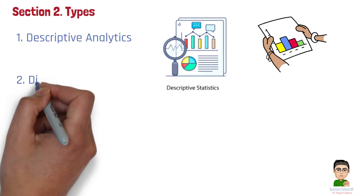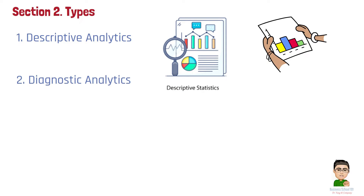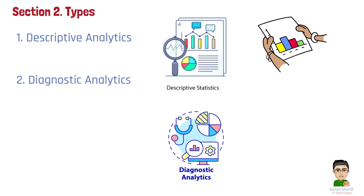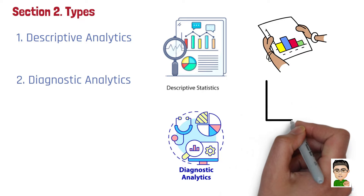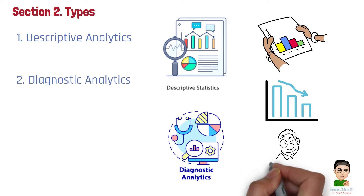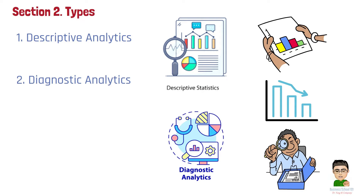Type 2: Diagnostic analytics. Diagnostic analytics digs deeper into the data to answer 'why did it happen?' It helps identify the root causes of past performance by uncovering patterns and relationships. For example, if sales dropped in a particular region, diagnostic analytics might reveal that a competitor recently opened a store nearby, leading to a decrease in market share.